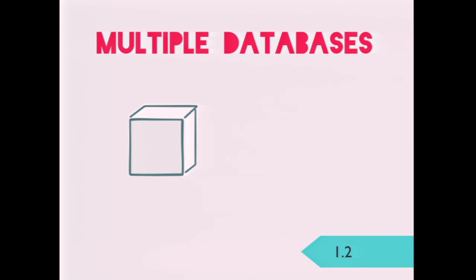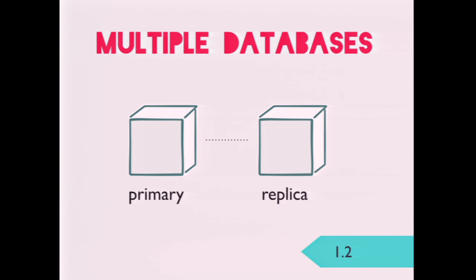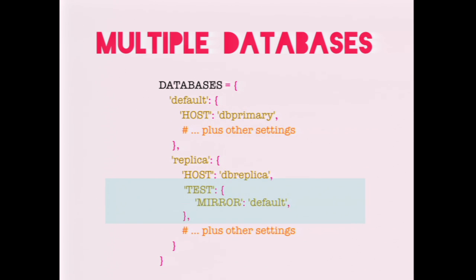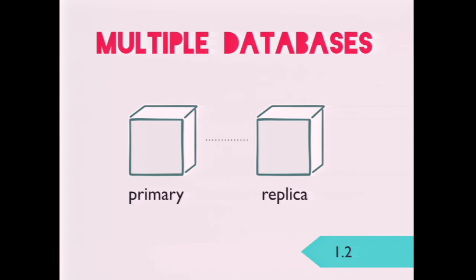Django has support for multiple databases with a replication strategy. You've got a primary database and multiple replicas. If the TEST_MIRROR setting is missing, during tests there won't be any replication — just the default database will be created. To simulate replication, Django allows you to set up a test mirror. When the test environment is configured, a test version of the replica won't be created. Instead, the connection to the replica will be redirected to point to default. As a result, writes to default will appear on the replica — not because there is actual data replication, but because they are actually the same database.